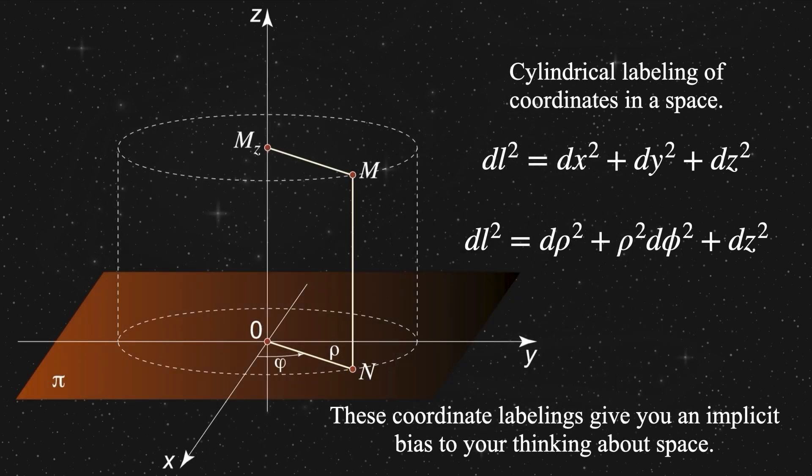In addition to spherical coordinates, we could use cylindrical coordinates. Basically, they're just polar planar coordinates with the Z axis sticking orthogonally up from the plane. So we have this very simply connected space and spaces. And these coordinate labeling things are giving you an implicit bias about how you think about space.